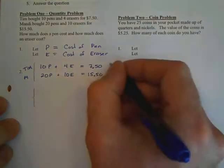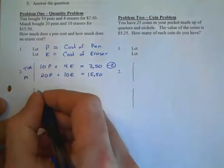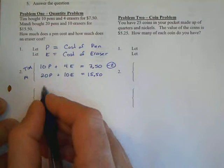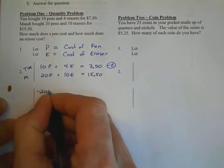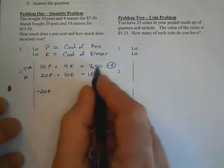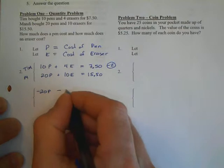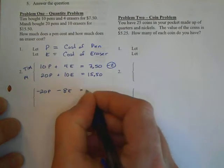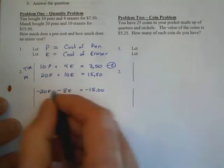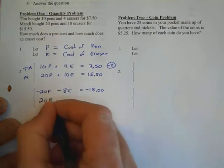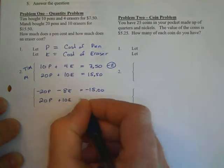As I consider this, I think I'd like to use elimination to drop out the P's. I'm going to multiply the top equation by negative 2, and that's going to give me negative 20 versus a positive 20. So I have -20P minus 8E equals -15.00.